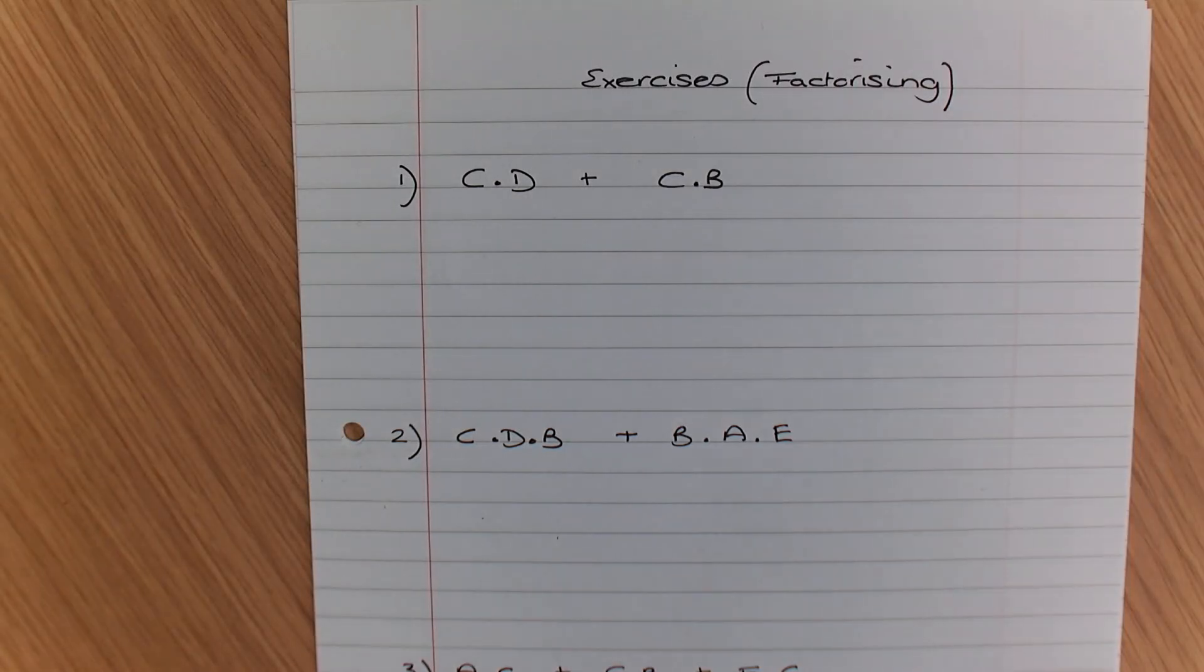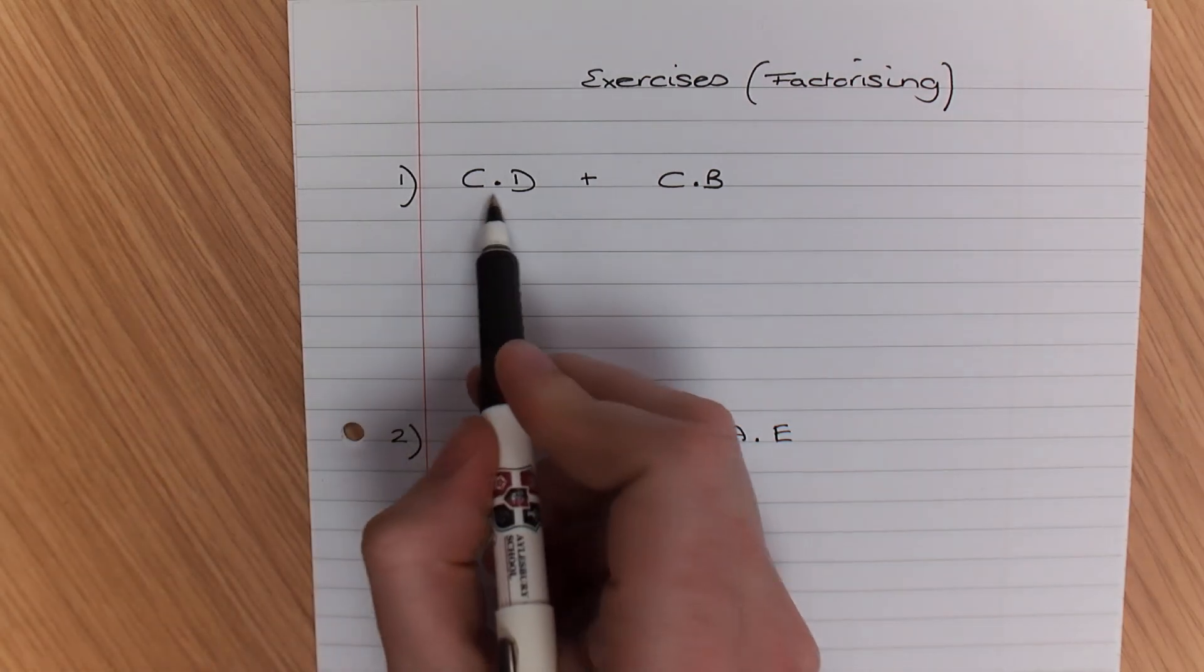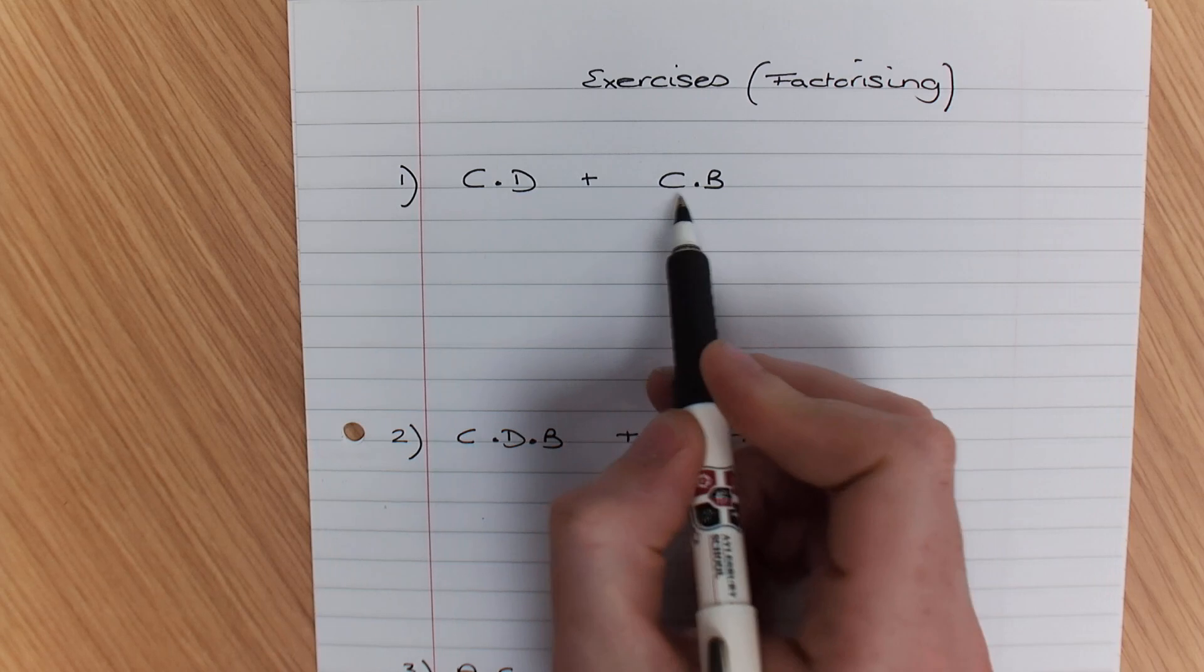I'm going to give you some examples of how to factorize here. What we've initially got is C and D or C and B.